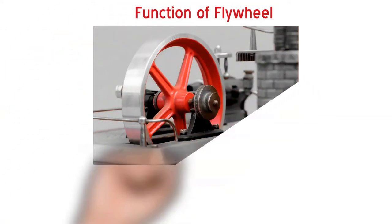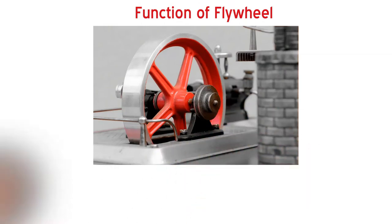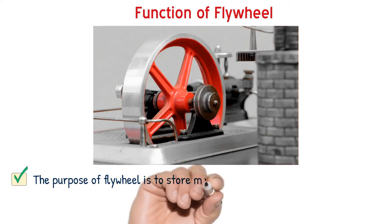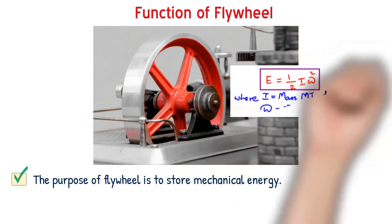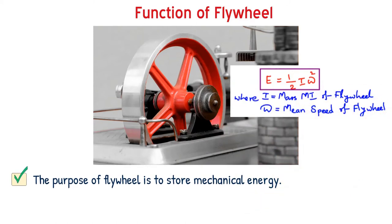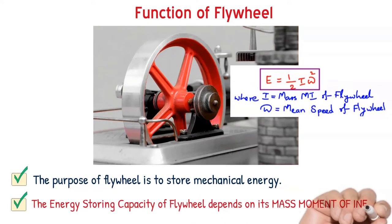We all know that flywheels are used in machines where there are fluctuations in the input and output power. The purpose of the flywheel is to store mechanical energy, which is stored in the form of kinetic energy. As you could see, the energy storing capacity of the flywheel is equal to half I omega square.